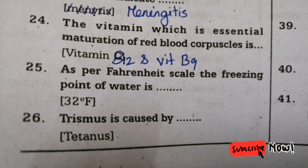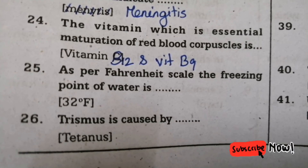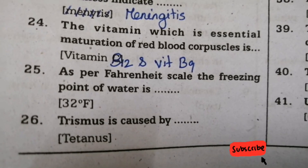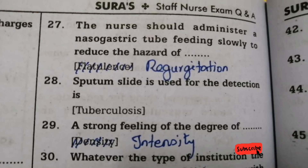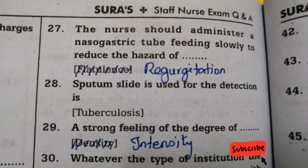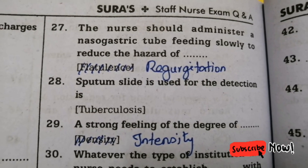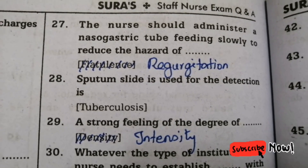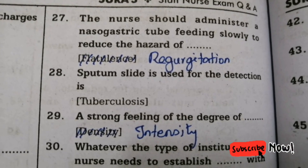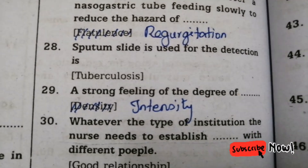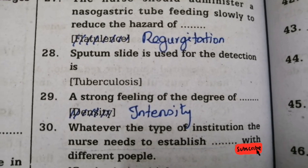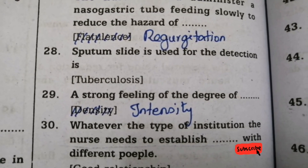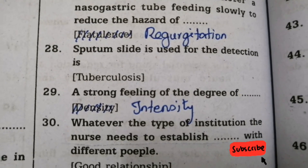Next question: trismus is caused by — answer is tetanus. Twenty-seventh question: the nurse should administer a nasogastric tube feeding slowly to reduce the hazard of — answer is regurgitation. Next question: sputum slide is used for the detection of — answer is tuberculosis.